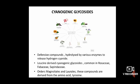Coming to cyanogenic glycosides. Cyanogenic glycosides are defensive compounds that are hydrolyzed by various enzymes to release hydrogen cyanide. The process of cyanogenesis is widespread in angiosperms. Leucine-derived cyanogenic glycosides are common in the families Rosaceae, Fabaceae, and Sapindaceae. In the orders Magnoliales and Laurales, these compounds are derived from the amino acid tyrosine.